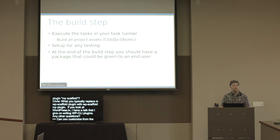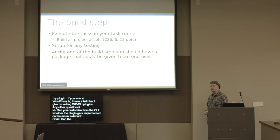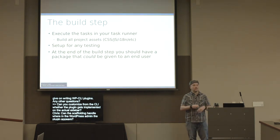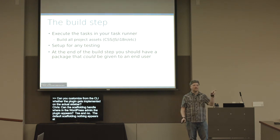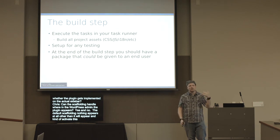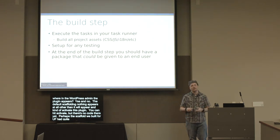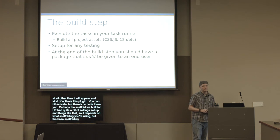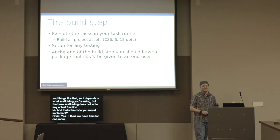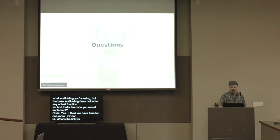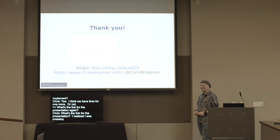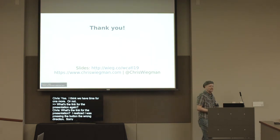Q: Can the scaffolding handle where in the WordPress admin the plugin appears? A: Yes and no. The default WP CLI scaffolding doesn't add any admin UI — it'll appear in the plugins list and you can activate it, but there's no settings code yet. A custom scaffold, like what we built for the University of Florida, had quite a bit of settings pre-configured. It depends on which scaffolding you're using — the base scaffold does not write any actual functionality. The slides are at WIEG.CO/WCATL19. Thank you all for coming; I'll be in the happiness bar this afternoon for further questions.